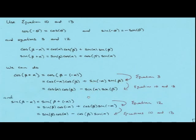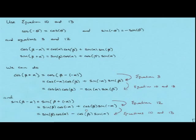We can do something similar for the sine of the difference of two angles. The sine of beta minus alpha is the sine of beta plus a negative alpha. Using our formula for the sine of the sum of two angles, we have sine of beta cosine of minus alpha plus cosine of beta sine of minus alpha.